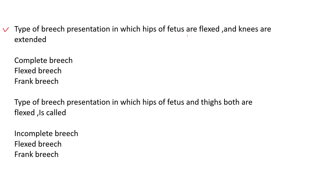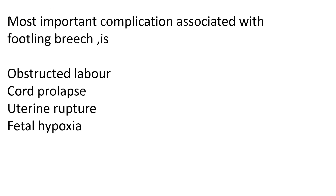Two important MCQs especially for AIMC students: first — the type of breech presentation in which hips are flexed and knees are extended (thighs flexed, legs extended) is frank breech presentation, also called extended breech. Second — the type in which both hips and thighs are flexed is called flexed breech or complete breech. Remember these two definitions; mnemonics are available in the description box.